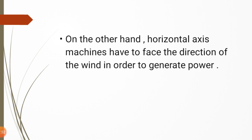Horizontal axis machines have to face the direction of the wind in order to generate power. In a horizontal axis wind turbine, the axis is parallel to the wind direction, so the rotor moves at maximum speed only when the wind is aligned. When the wind direction changes, the rotor moves at lower speed. This is the disadvantage of horizontal axis wind turbines, which is overcome by vertical axis wind turbines.